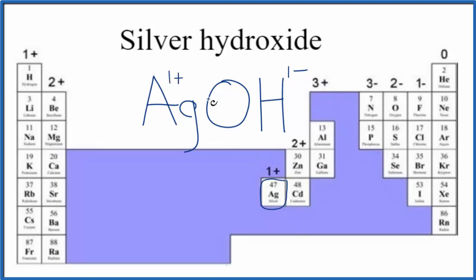Sometimes, because silver is here with the transition metals, you'll see this written as silver 1 hydroxide. But quite often, it's just silver hydroxide.